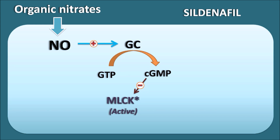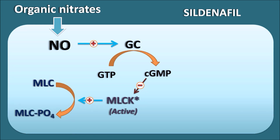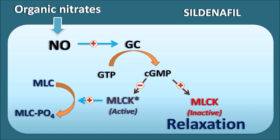MLCK — myosin light chain kinase — when activated, is responsible for the conversion of myosin light chains into myosin light chain phosphate. When MLC is phosphorylated to MLC-phosphate, it can bind with actin to produce the actin-myosin complex, which brings about contraction of the vascular smooth muscle. As cyclic GMP inhibits this active MLCK form, it prevents contraction and converts MLCK into its inactive form, resulting in relaxation of the vascular smooth muscle. In this way, organic nitrates release nitric oxide, which produces vasodilatation.